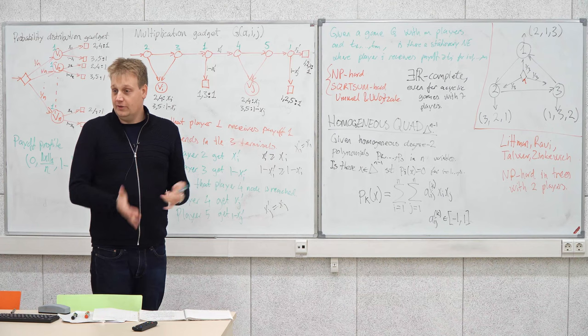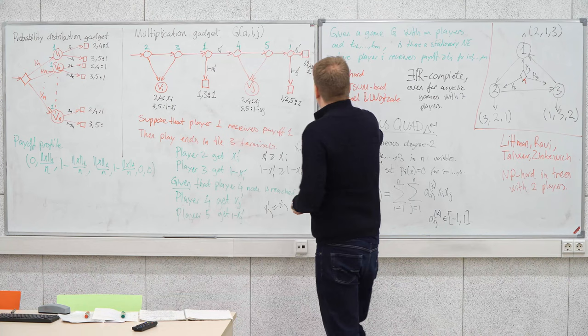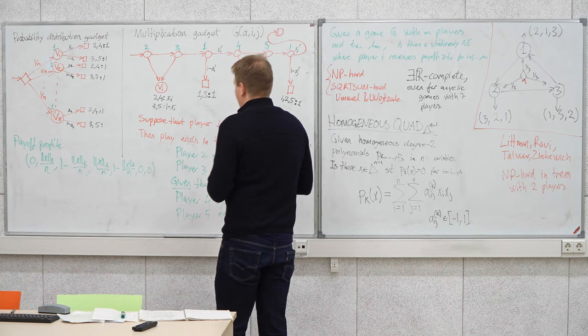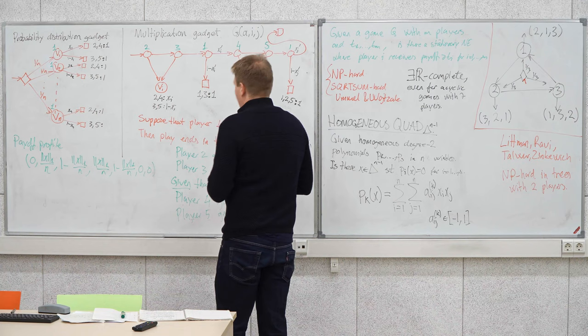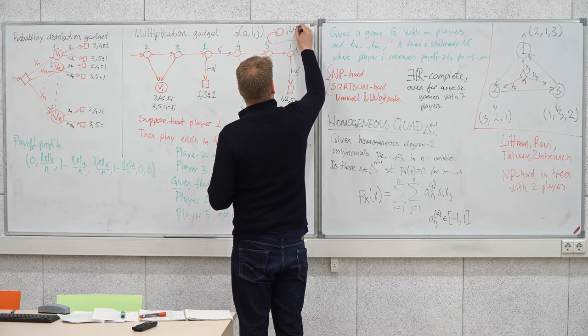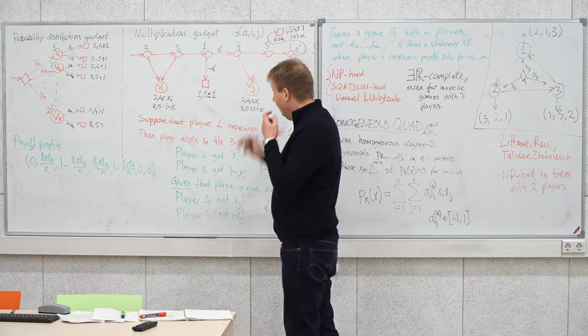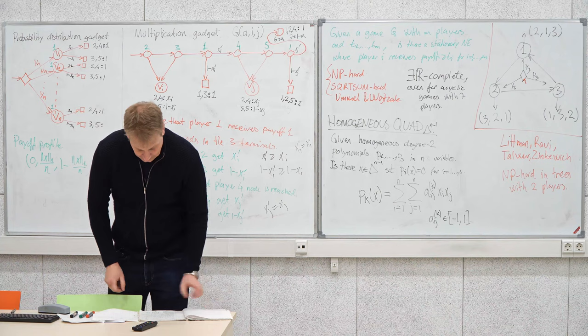We use the multiplication result to accumulate payoffs to players 6 and 7. At the final terminal, player 6 gets coefficient alpha and player 7 gets 1 minus alpha. This is similar to using two inequalities to enforce an equality — ensuring that the polynomial constraint can be met precisely.